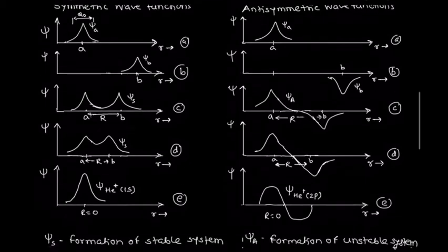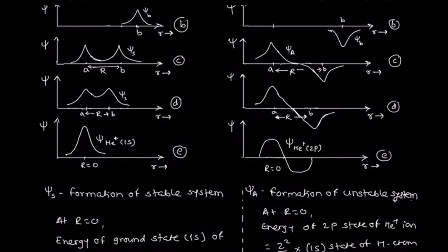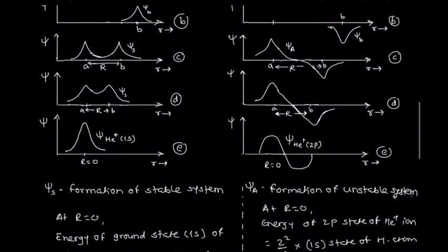The final result we conclude from the two observations: for the symmetric wave function, formation of a stable molecular system is possible, but for the anti-symmetric wave function of the electron in H2 plus, the stable molecular system cannot be formed. We also calculate the energy at R equal to zero and at the extreme limit R equal to infinity from the nature of the wave functions.